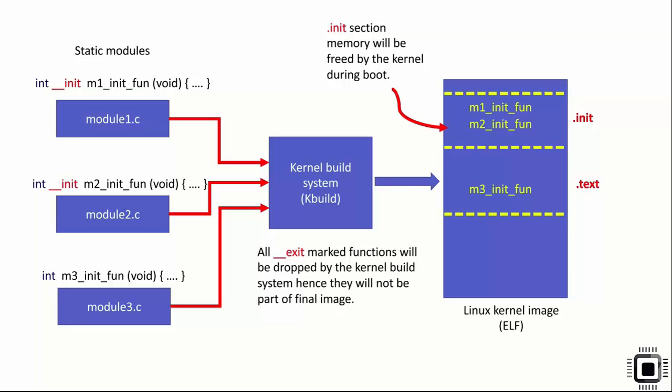When the kernel boots, it calls m1_init and m2_init, and afterward the kernel frees the memory consumed by the .init section, because these functions will not be executed again during kernel runtime. There's no reason to keep the .init section, so it gets freed. However, m3_init is not tagged with __init, so it remains in the .text region and permanently consumes memory during kernel runtime. Also remember that all __exit macro functions will be dropped by the kernel build system and will not be part of the final image.